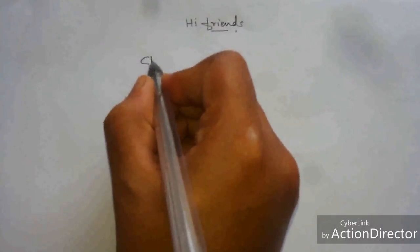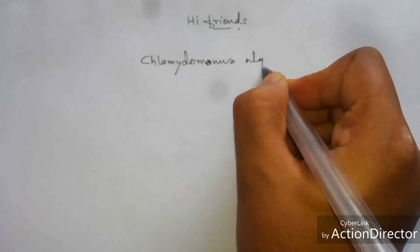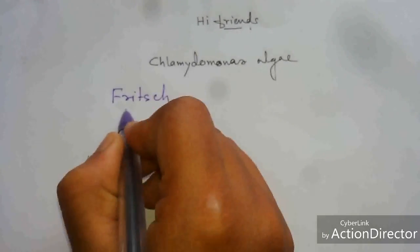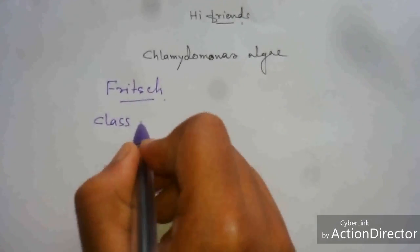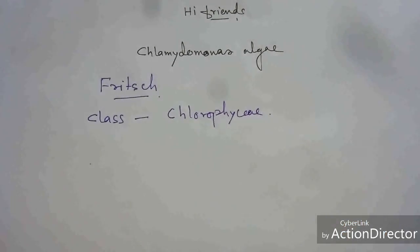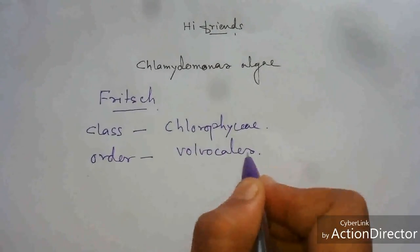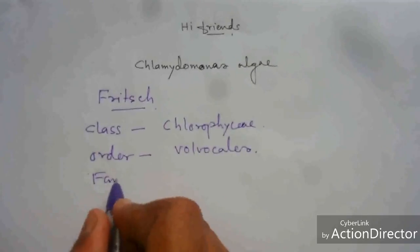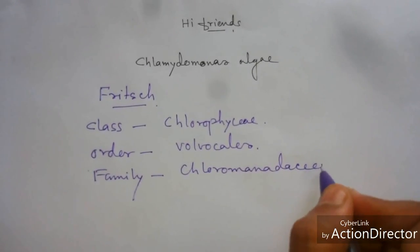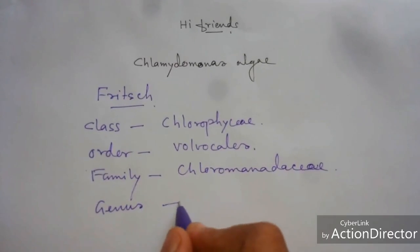Today's topic is Chlamydomonas algae. According to Fridge classification, the class of Chlamydomonas is Chlorophyceae, the order is Volvocales, and the family is Chlorophyceae. The genus is Chlamydomonas.